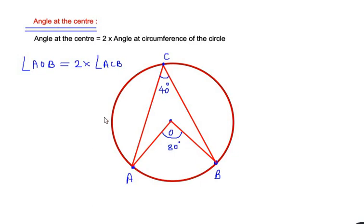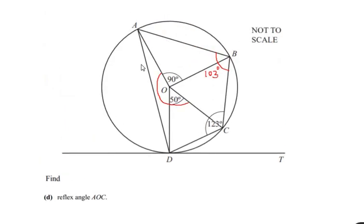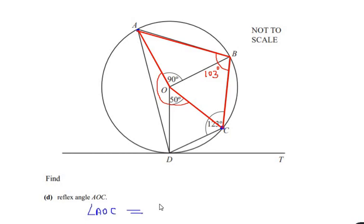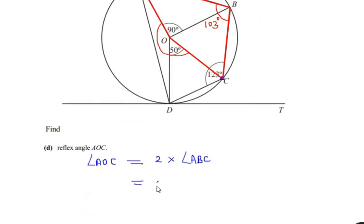For example, if the angle at the circumference is 40 degrees, the angle at the center is exactly two times, which is 80 degrees. Applying this to our example: points A and C make an angle at the center at O, and the same two points make an angle at the circumference at point B. So angle AOC equals two times angle ABC. We found angle ABC as 103 degrees, so the reflex angle AOC is 2 times 103, which gives 206 degrees.